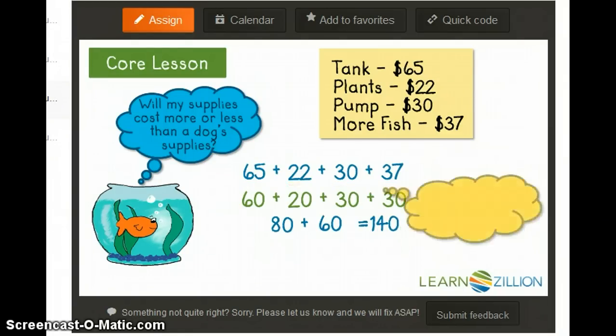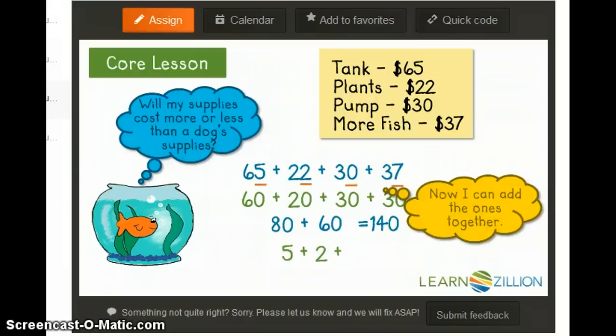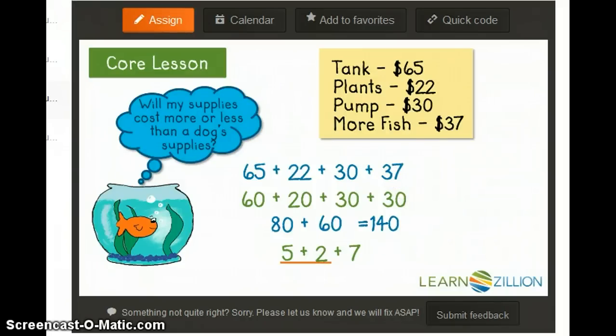I can now add together the ones: 5 plus 2 plus 7. I don't need to add in the zero because there are no ones in 30. I know that 5 plus 2 is 7, so 7 plus 7 more equals 14.